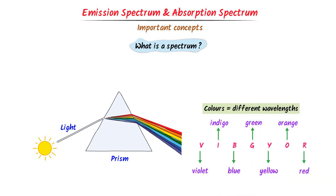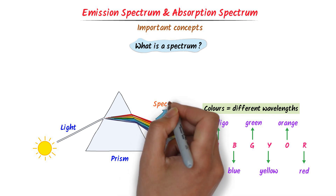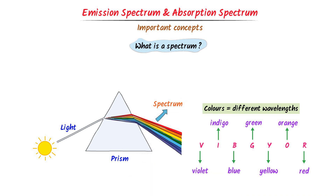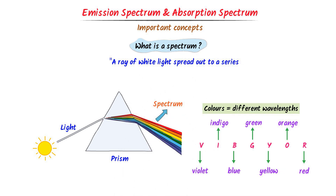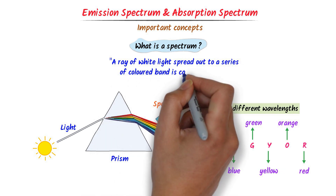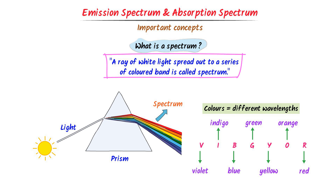Now listen carefully. The white light contains seven colors. This ray of seven colors is called spectrum. We define spectrum as a ray of white light spread out to a series of colored bands.